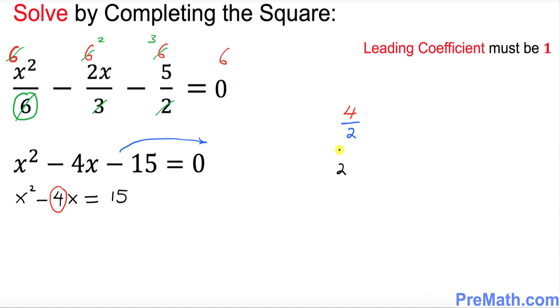The next step is I want you to divide it always by 2. So 4 divided by 2 is gonna give you 2. And at the end, whatever you got, just square it. So this is the number we got.